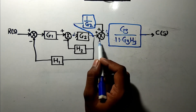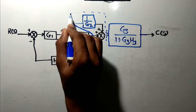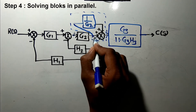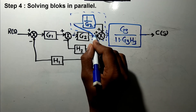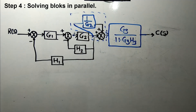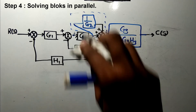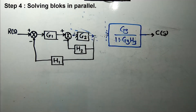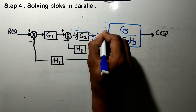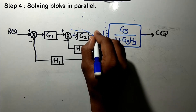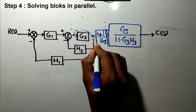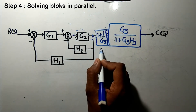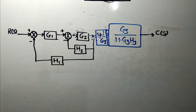After this step, the next step is to solve this block connected in parallel. Since the summing point is after this, the parallel combination gives a transfer function of 1 plus 1/G2. So after solving this step we get the block (1 + 1/G2) connected here, and our block diagram is updated accordingly. You can now see that some blocks are connected in cascade.